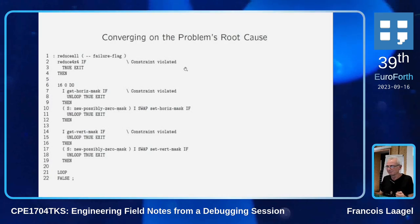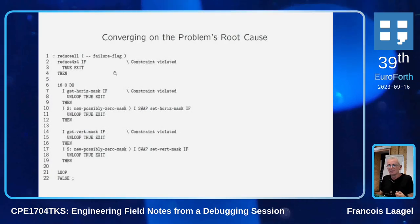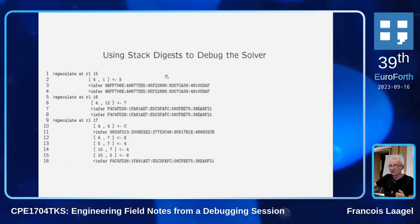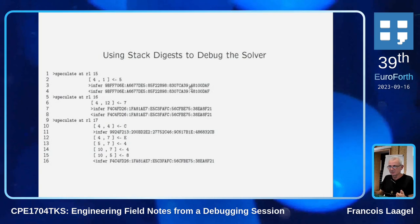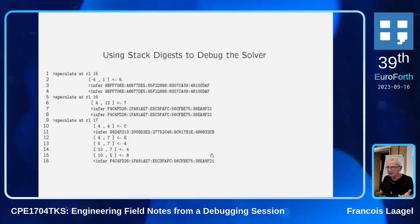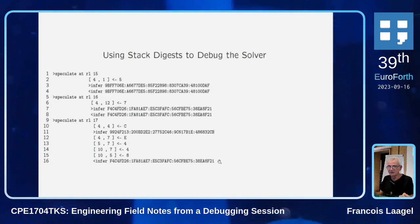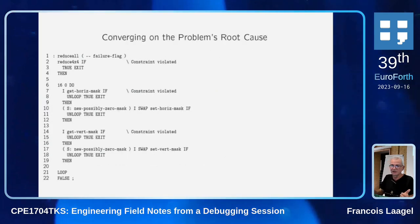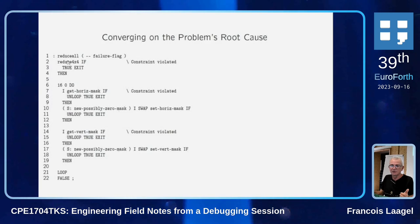Using those message digests and detecting the data stack change, I was able to converge on the error, which was an extra 2-drop in this primitive here — the reduce-or-by operation.